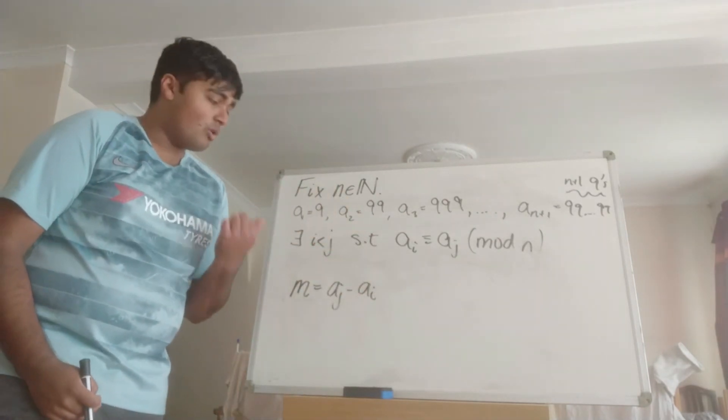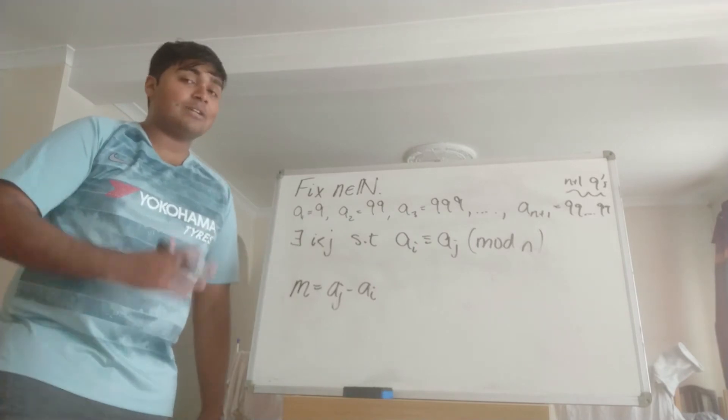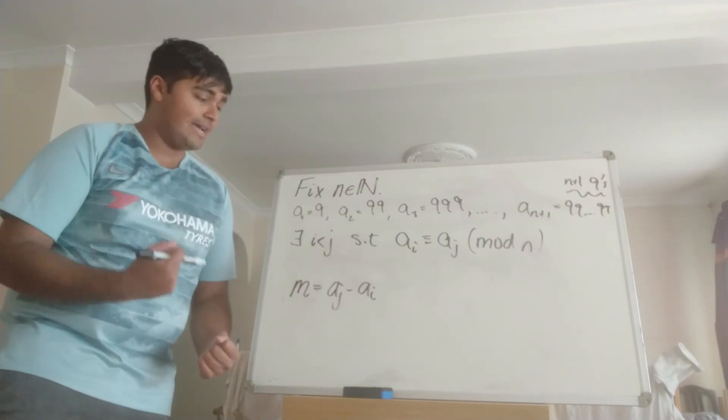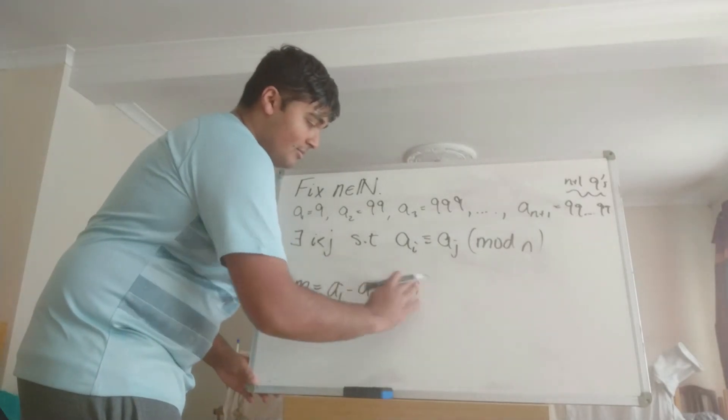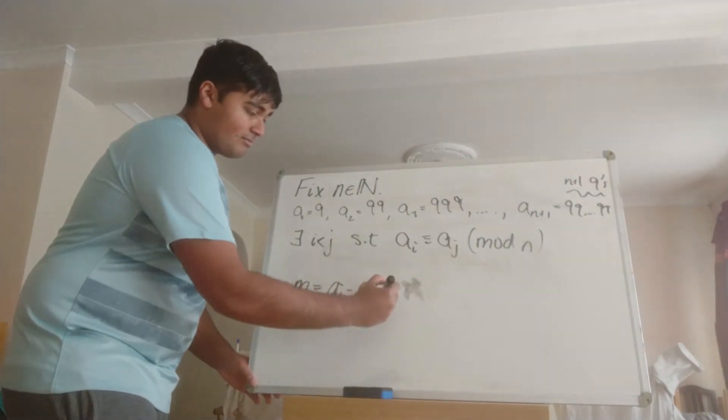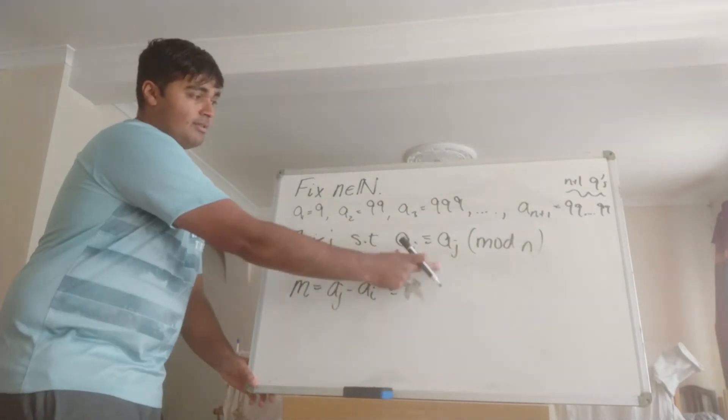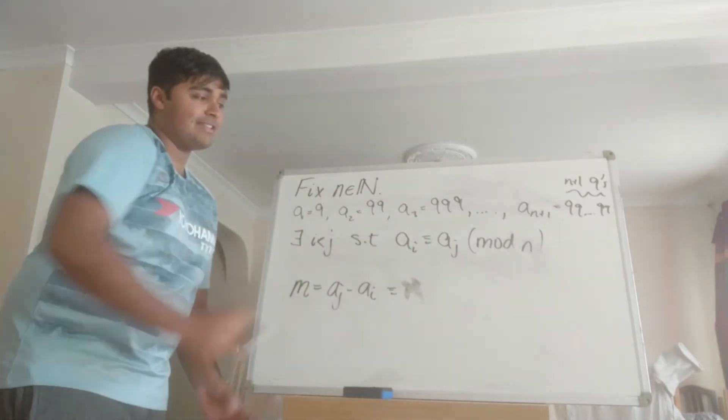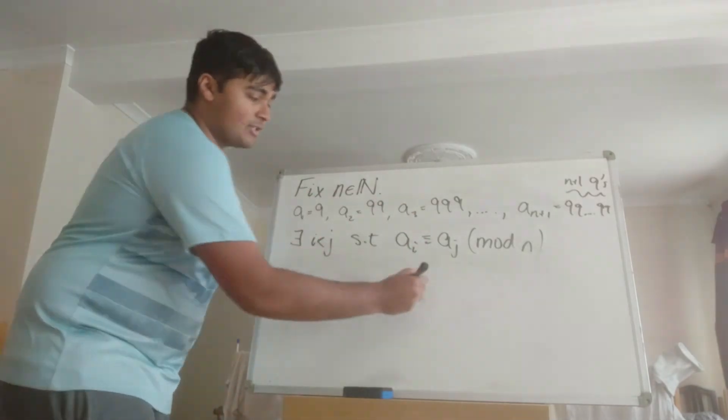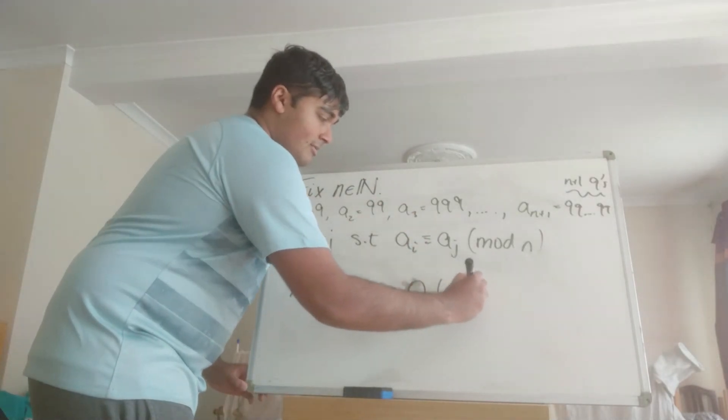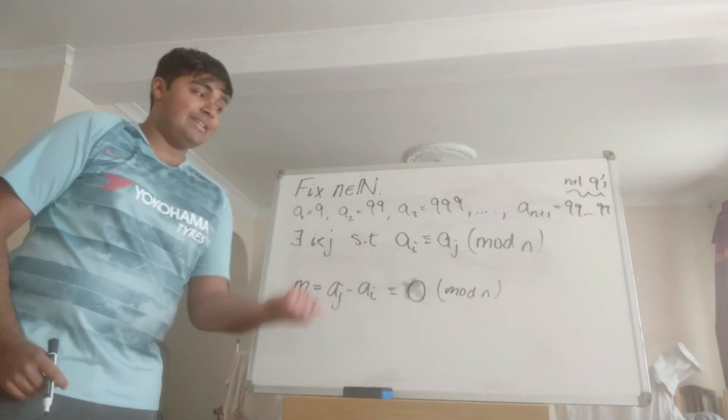Firstly, let's check that it's a multiple of n. So that's equivalent to showing that it's 0 mod n. But m, well this guy here, is just from the line above. If I bring the ai onto the right-hand side, aj minus ai is just congruent to 0 mod n. So indeed, m is a multiple of n.